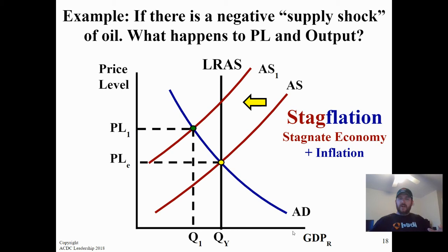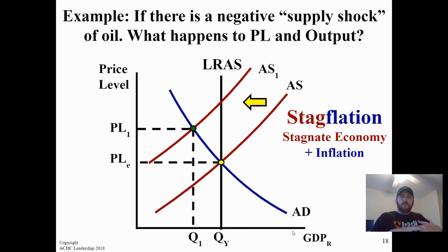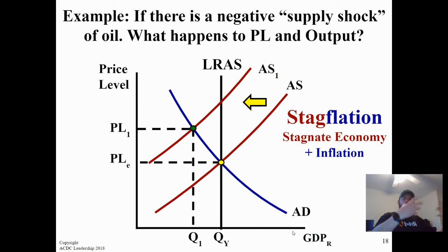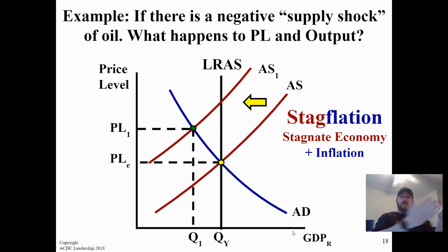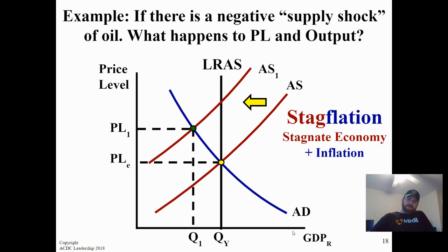When aggregate supply shifts left, we see both an increase in price level and a decrease in output — this is stagflation. It's a stagnant economy with high prices. People are losing jobs but still buying goods, driving up prices through demand-pull inflation, while unemployment also rises. We're kind of seeing this now, just not at the same rate as the 1970s. This is the worst-case scenario.